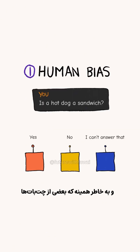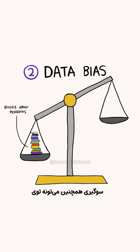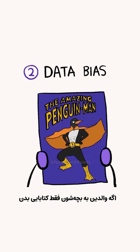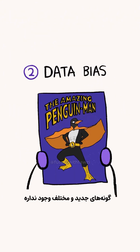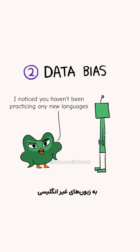And this is the same reason why some chatbots will respond differently if you ask them controversial questions. Bias can also exist within the training data if it has any imbalances that ignore the nuances of the world. If the parents only give their child books about penguins, there is no way for them to learn about new and different species. This is why language models might give you lower quality responses in languages other than English.